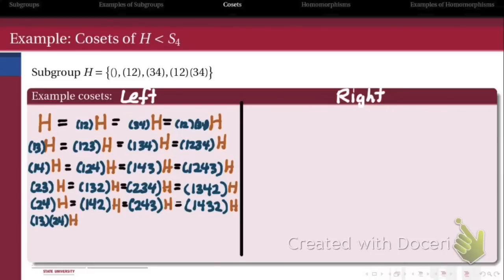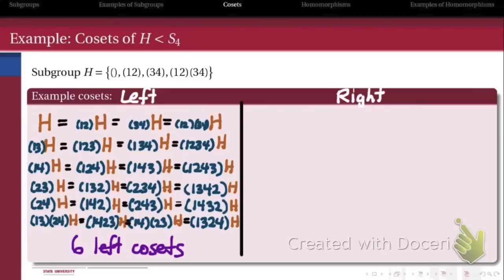And last but not least, the left coset generated by the product of (1,3) and (2,4). And since each of those left cosets has 4 elements in it, what we end up with is that each of those 4 elements in a given coset generates the same coset as each other. So we find out that we have a total of 6 left cosets of the subgroup H.